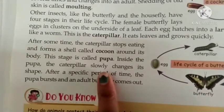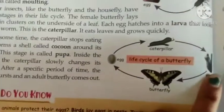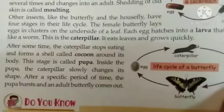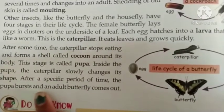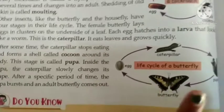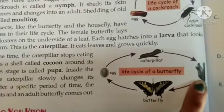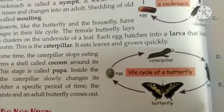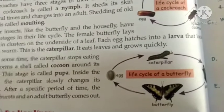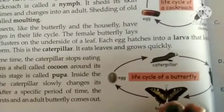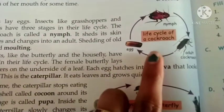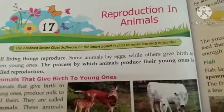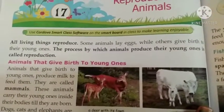Inside the pupa, the caterpillar slowly changes its shape. After a specific period of time, the pupa breaks open and the adult butterfly comes out. So the butterfly life cycle has four stages. The cockroach life cycle has three stages. This completes chapter number 17: Reproduction in Animals. I hope you are all clear — thank you.